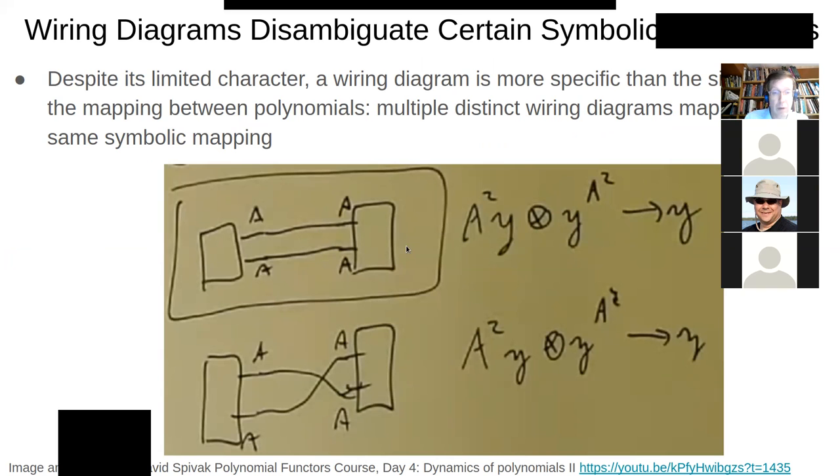Okay, so that's, this wiring diagram has this characterization in terms of the type of it, of its mapping, of what it represents as a dynamical system.